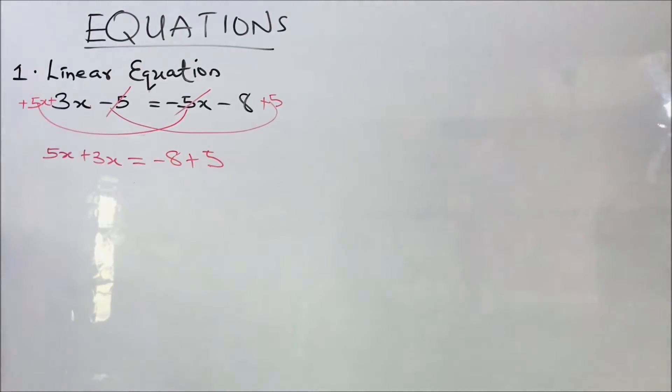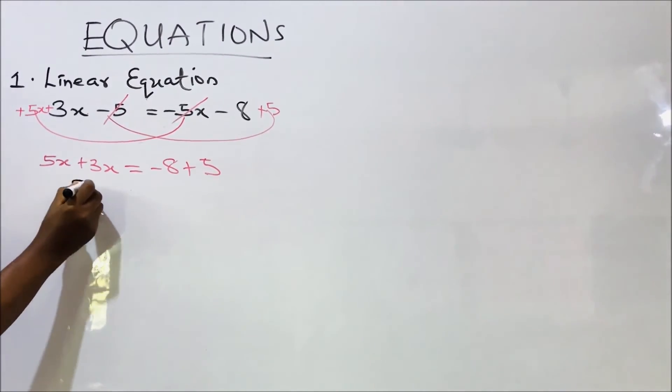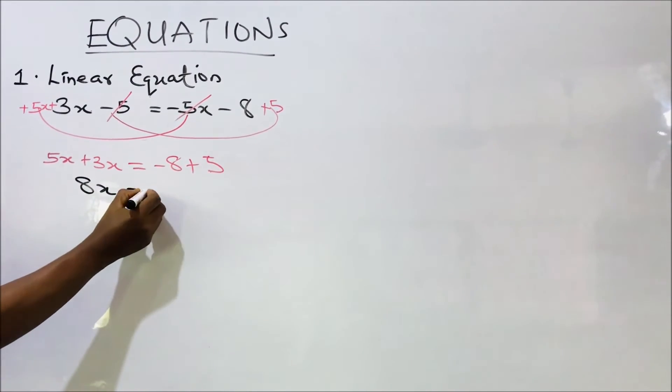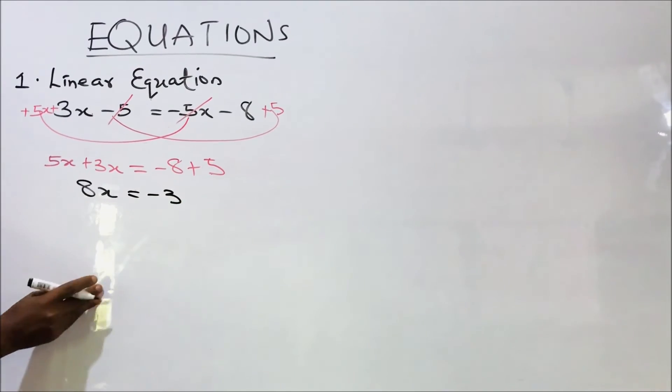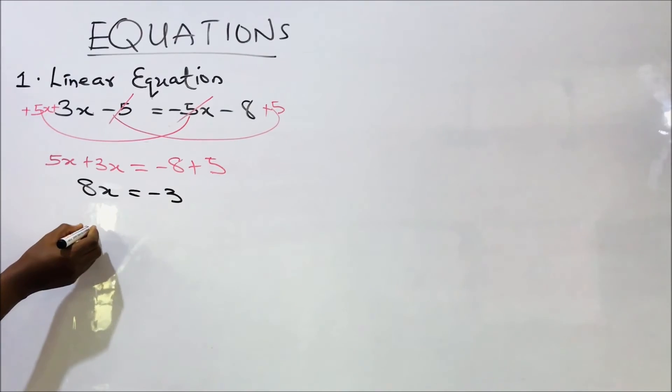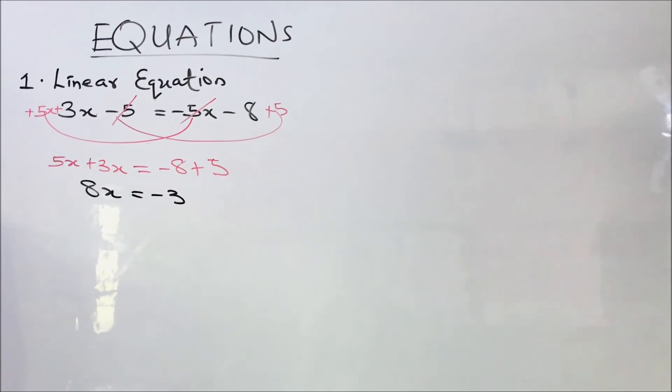All right. So I can add these two. That will give me 8x. Then minus 8 plus 5, that should give me minus 3. So at this point, we're looking for x. We're going to divide both sides by the coefficient of x.